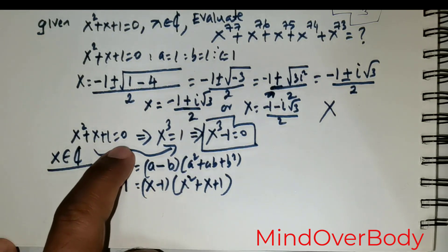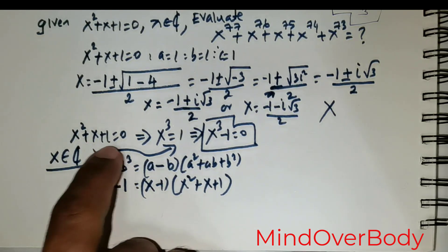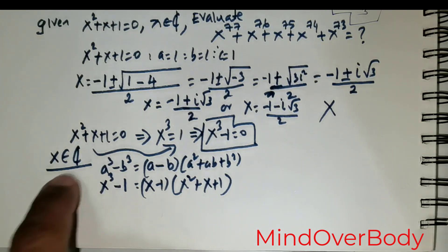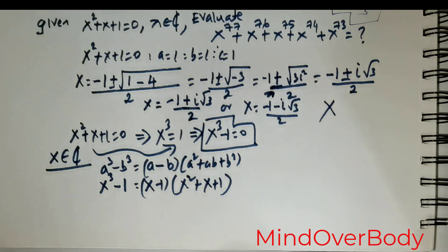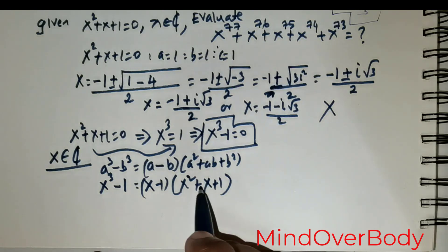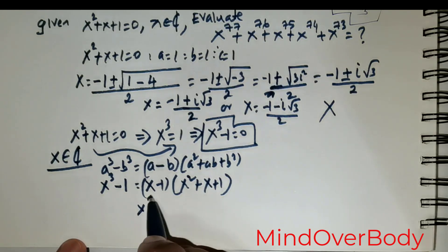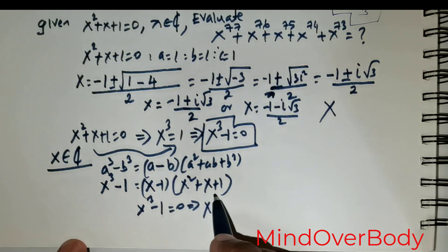x squared plus x plus 1 can only equal 0 in the complex domain. That is why x being an element of the complex numbers is crucial in obtaining the solution correctly. The most important aspect in mathematics is to understand why we are doing something — that is the key. Solutions are not as important as the procedure, the logic, the rationale, and the justification behind them. So: x squared plus x plus 1 equals 0 causes the factor to vanish, leaving x cubed minus 1 equals 0, which implies x cubed equals 1.